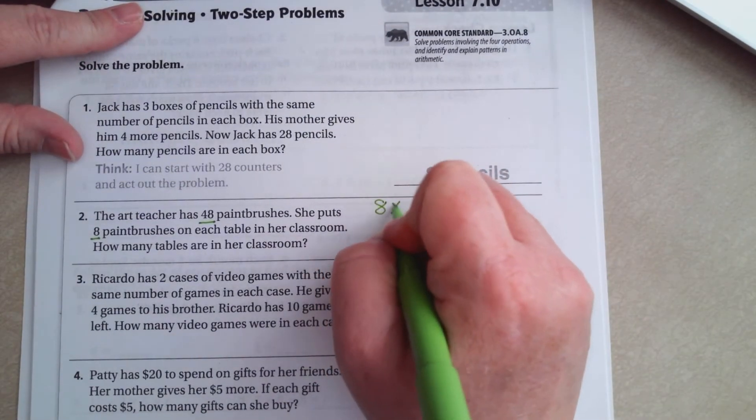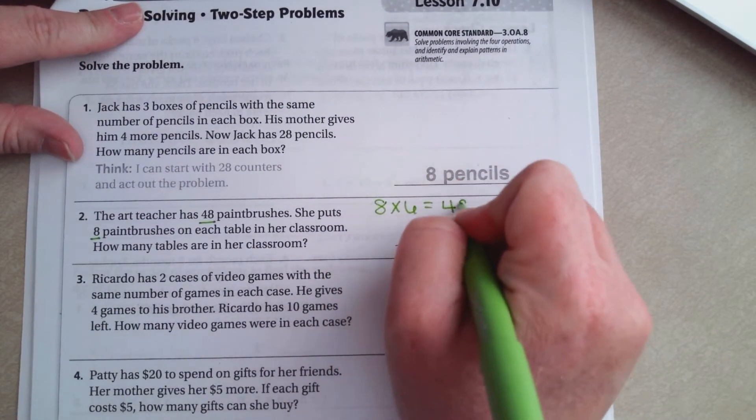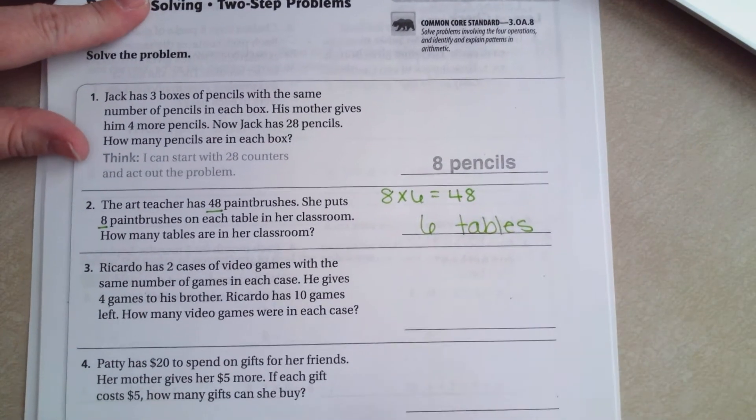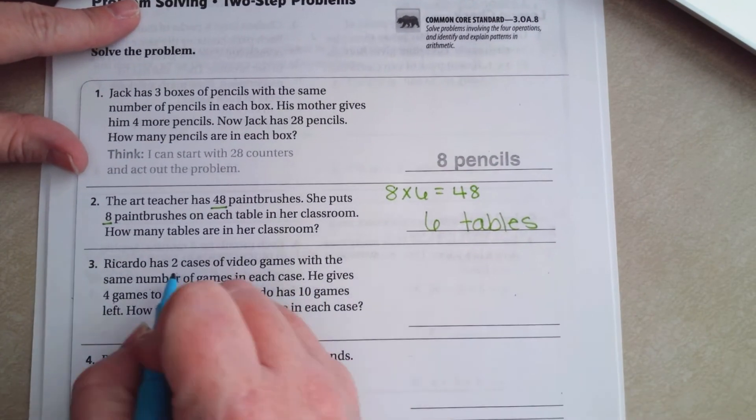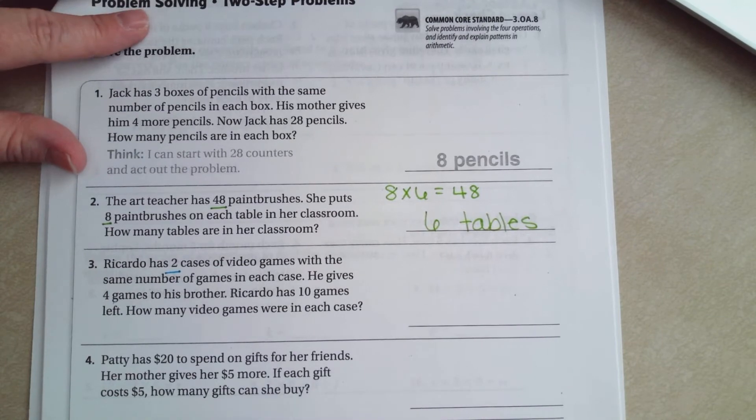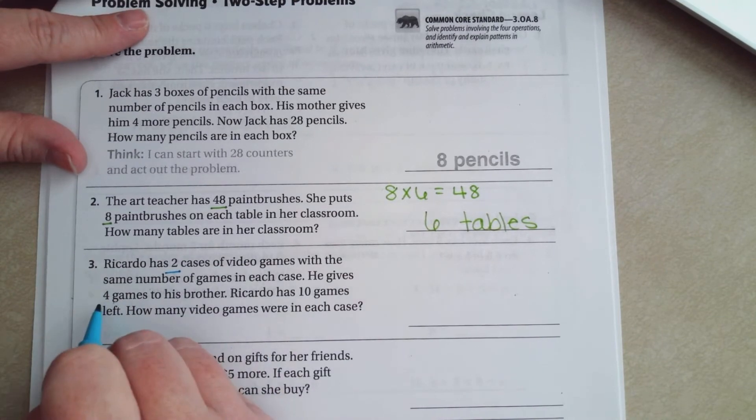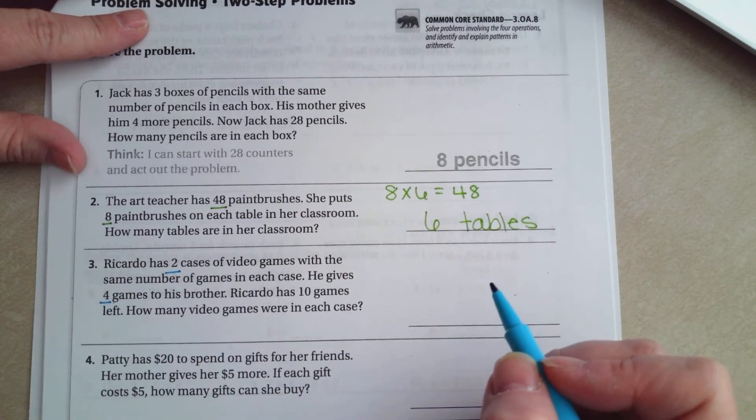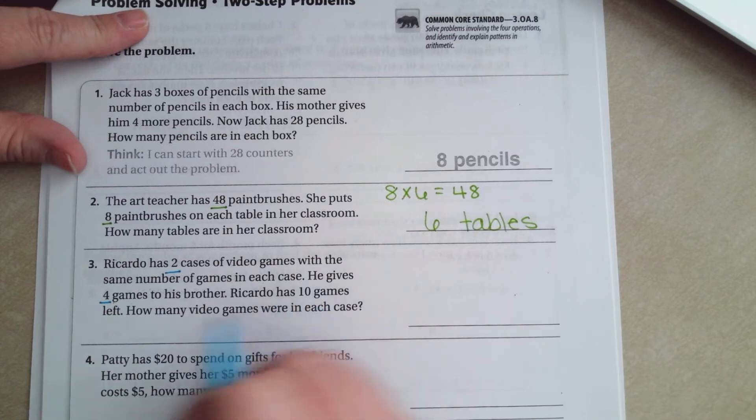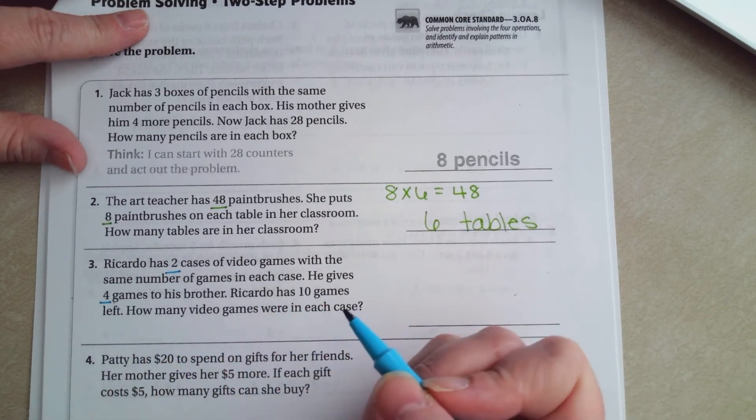Ricardo has two cases of video games with the same number of games in each case. He gives four games to his brother. Ricardo has 10 games left. How many video games were in each case?